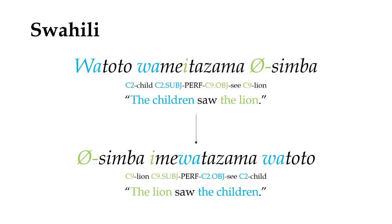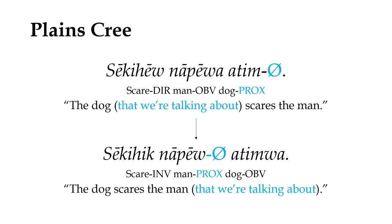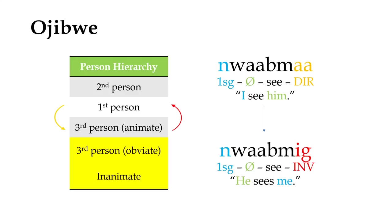Alternatively, another strategy for disambiguation is obviation, which involves two different third-person markers: one for the proximate argument — the one most central to what's being discussed — and one for any other third-person arguments, termed obviate arguments, which are either less relevant to the conversation or considered background information. Obviation is very strongly correlated with direct-inverse systems, as can be seen in Algonquian languages like Plains Cree and Ojibwe, which also have an animacy distinction on top of obviation to further minimize ambiguity.